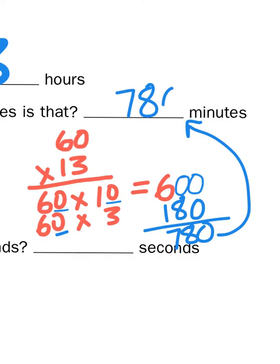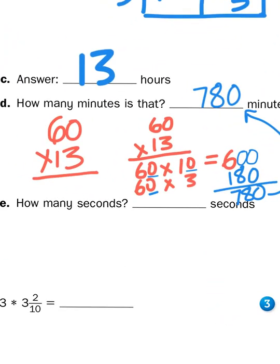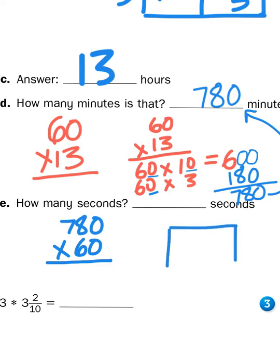I'll put seven hundred and eighty minutes up here. Now I need to know how many seconds that is. There are sixty seconds for every minute, just like there are sixty minutes in an hour. So I'm going to multiply seven hundred and eighty by sixty. These zeros are just place value holders, so really I'm multiplying seventy-eight times six and then adding the zeros at the end — using the partitioning rectangle strategy again.